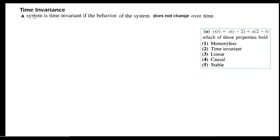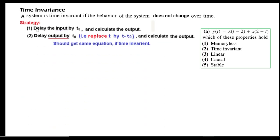The next property is time invariance. A system is time invariant if its behavior does not change over time. The strategy is: delay the input by t0 and calculate the output (Case 1), then delay the output by t0 by replacing t with t minus t0 and calculate that output (Case 2). If both outputs are the same, the system is time invariant.